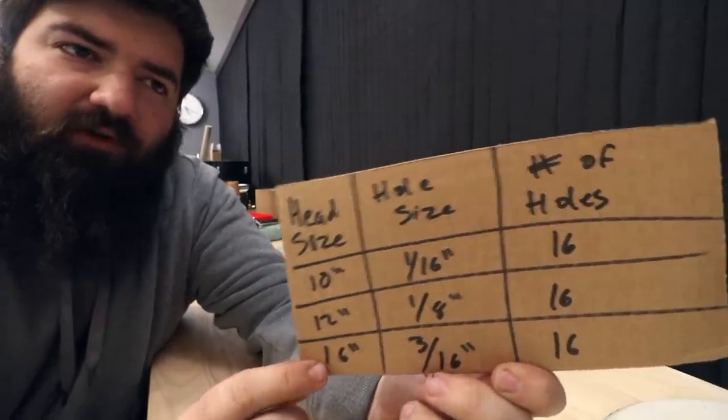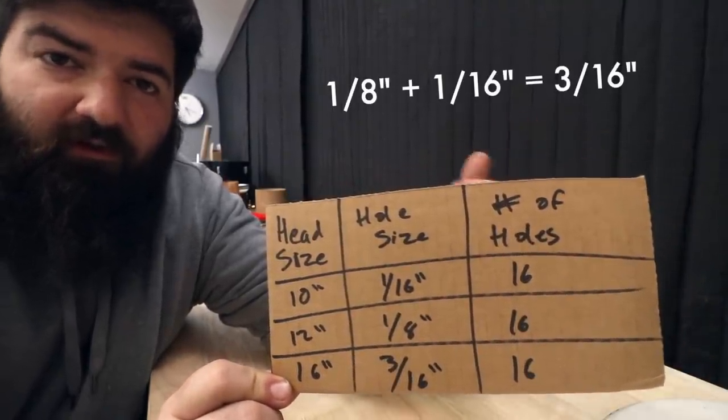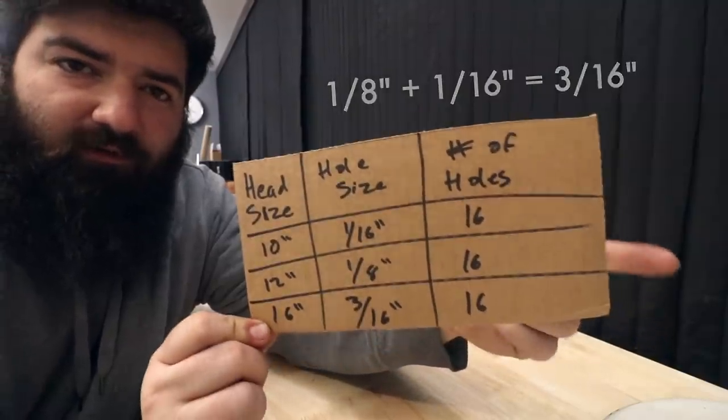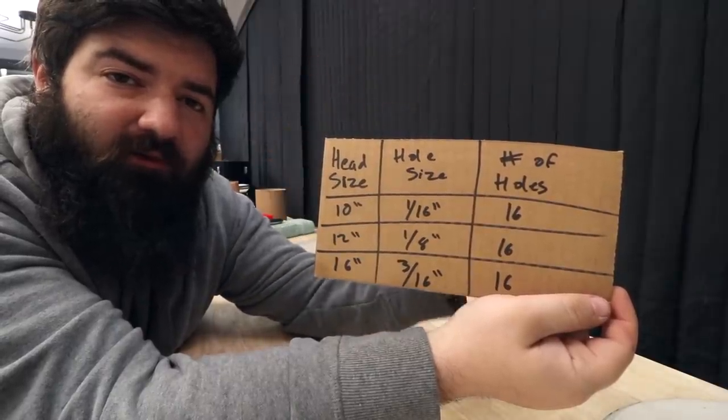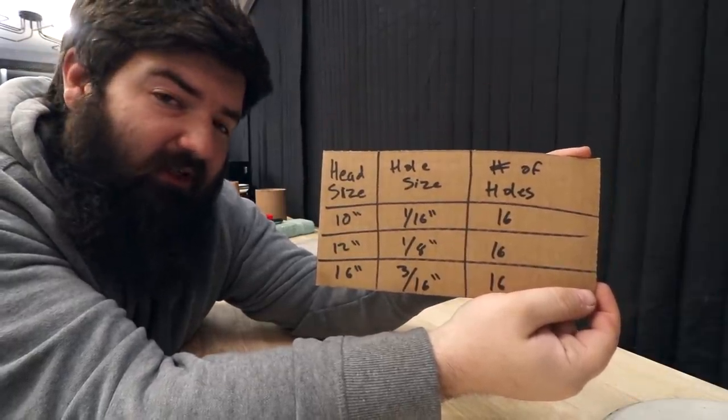Then for the 16-inch, we'll go with 3 16ths of an inch, which is a 16th bigger than an 8th. And again, we'll go with 16 holes. So with this plan, we're scaling the size of the hole to the size of the head and leaving the number of holes the same.